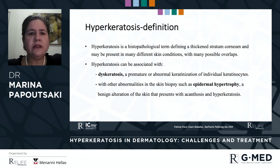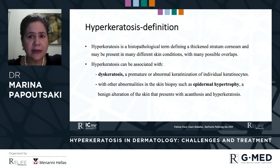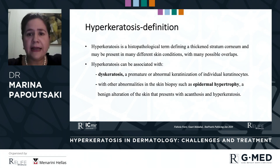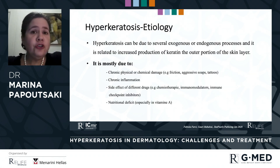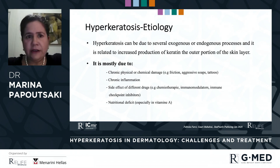Hyperkeratosis can be associated with dyskeratosis, which is a premature or abnormal keratinization of individual keratinocytes, or with other abnormalities in the skin biopsy, such as epidermal hypertrophy, a benign alteration of the skin that presents with acanthosis and hyperkeratosis. It can be due to several exogenous as well as endogenous processes, and it is related to increased production of keratin at the outer portion of the skin layer.